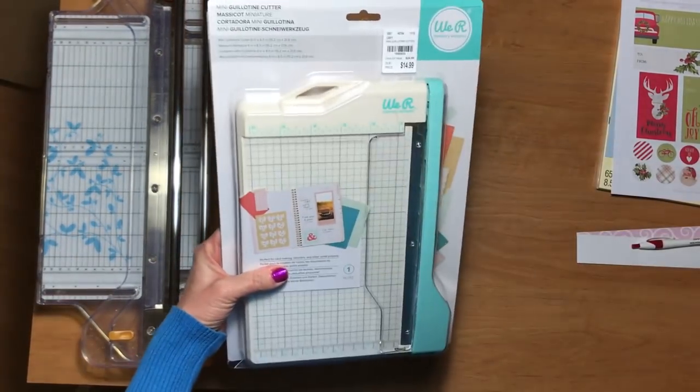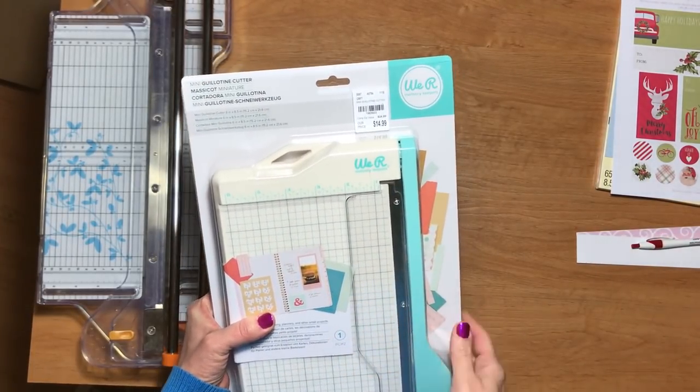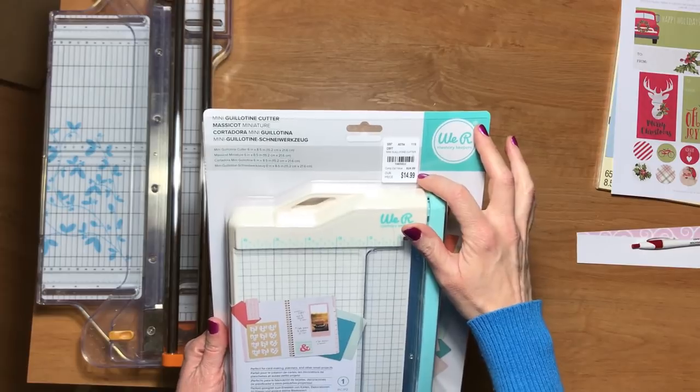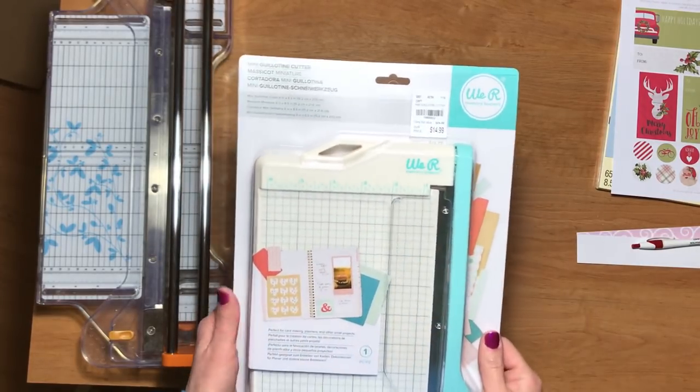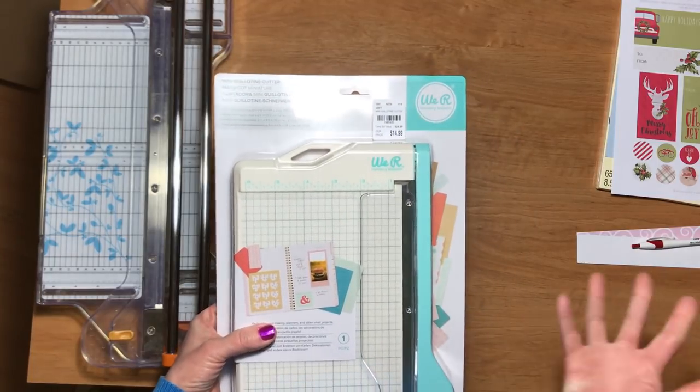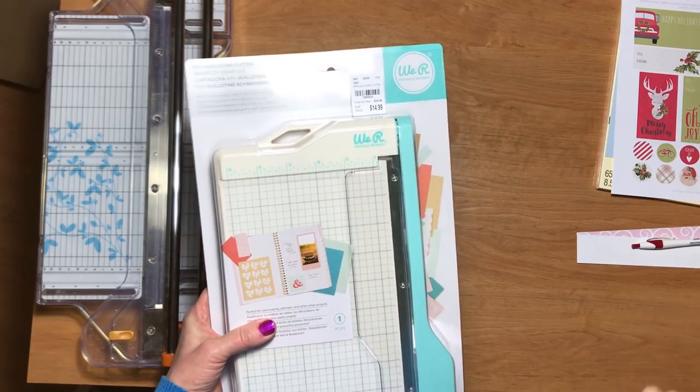When I saw this one, the mini guillotine cutter by We Are Memory Keepers at Tuesday Morning, which I just showed you in my haul for $14.99, regularly $24.99, I decided to get it because I thought this would be an excellent size to just keep out on your table and it would also be great for traveling.